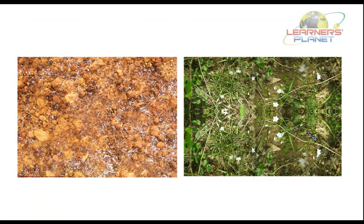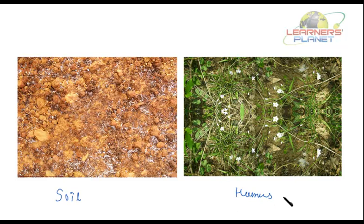Let us see one image of soil and humus. This is the image of soil, and this is the image of humus. A layer of dead and decaying plant and animal remains is called humus. You can see in this picture there are many decayed plants and animal remains — this is humus. Soil is composed of many particles and humus too.